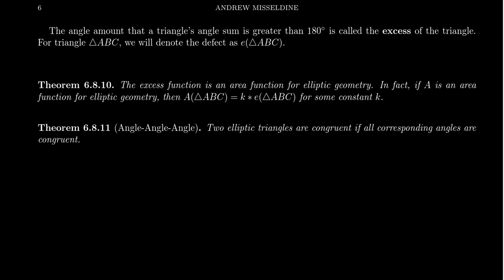As an immediate consequence, the angle sum of every elliptic quadrilateral will exceed 360 degrees, since it's just two triangles put together. Similar statements hold for higher-vertex polygons in elliptic geometry. Because the angle sum of an elliptic triangle always exceeds 180 degrees, we can measure the surplus — we call this the excess of the elliptic triangle, measuring how much the angle sum exceeds 180 degrees.